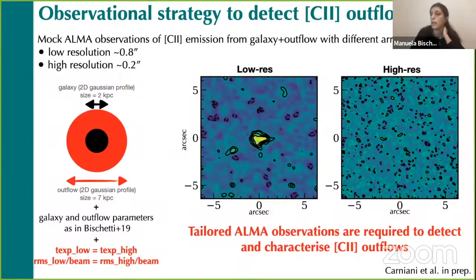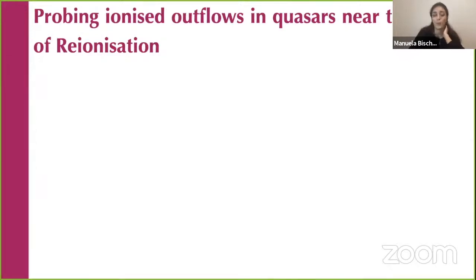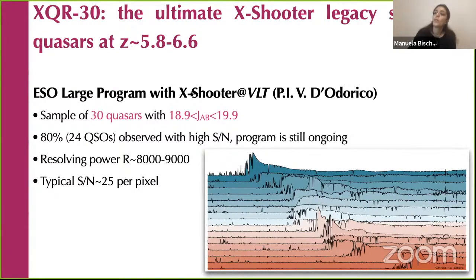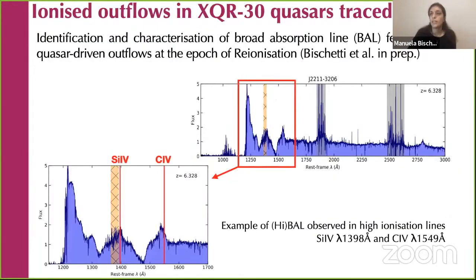Let me now move to another kind of outflow as traced by the ionized gas phase. I introduce the XQR-30 sample — the Ultimate X-Shooter Legacy Survey of quasars at redshift between 5.8 and 6.6 — which is an ESO large program with VLT targeting 30 quasars selected to be luminous in the J magnitude. These are deep, high-resolution observations, and most of the sample has already been observed with high signal-to-noise. I will focus on ionized outflows in XQR-30 quasars as traced by broad absorption lines.